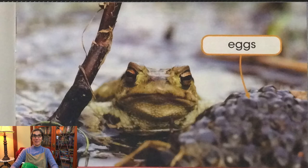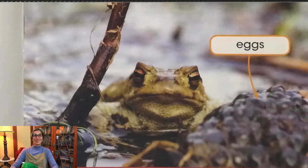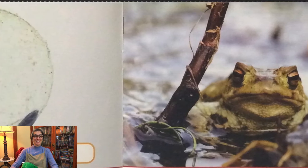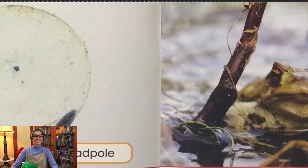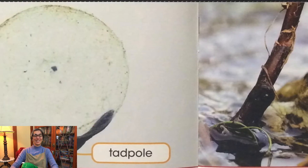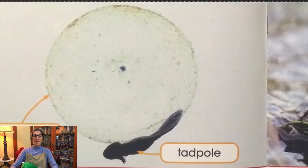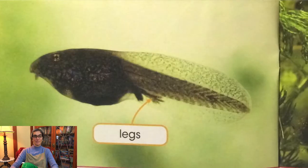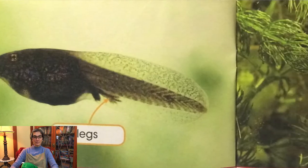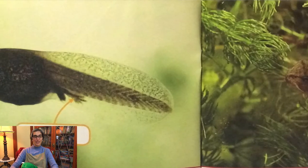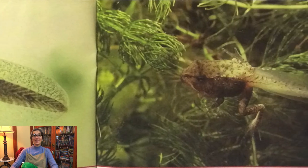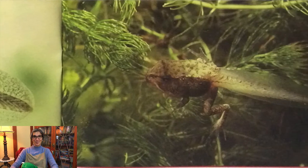Let's review the life cycle of a frog. It starts when the female frog lays the eggs. Then a tadpole hatches from the eggs. The tadpole grows legs, and then the tadpole becomes an adult frog. And the life cycle starts over again.